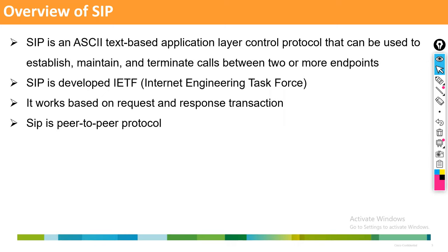In MGCP, all configuration — T1, FXO, everything — is done on the CUCM, not on the gateway. In SIP, CUCM has its own configuration and the gateway has its own. Also in MGCP, incoming calls from the PSTN are forwarded all the way to CUCM — that's the backhaul or MGCP backhaul. In SIP, the call terminates on the gateway itself, and from the gateway a new call leg is generated — that's the peer-to-peer nature.